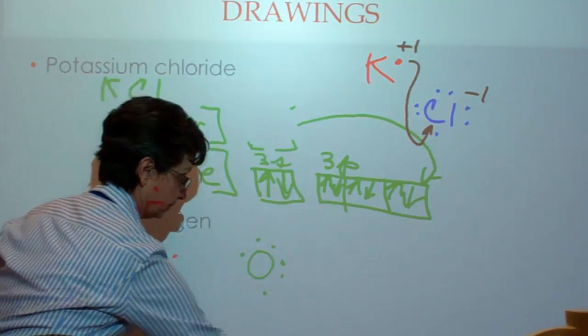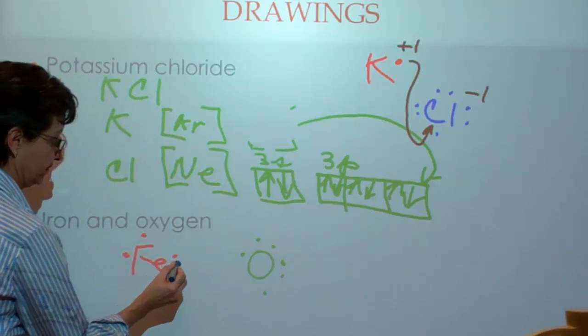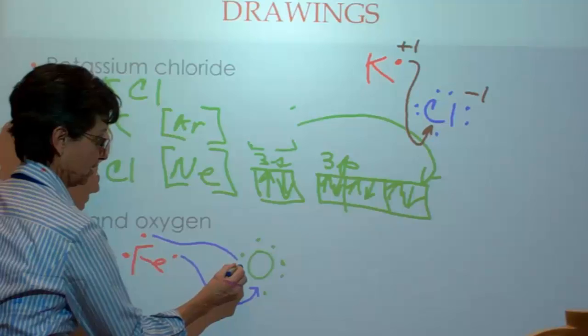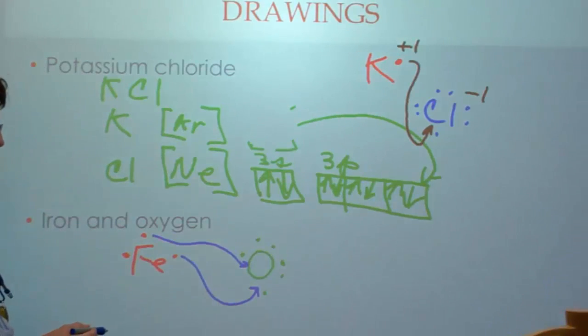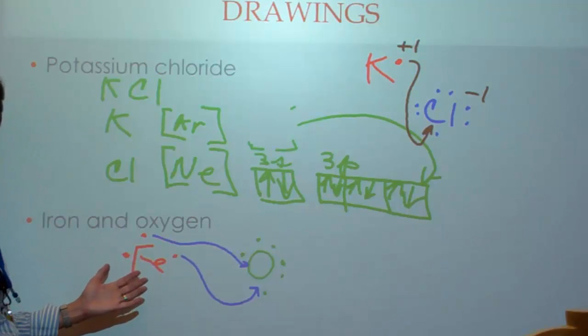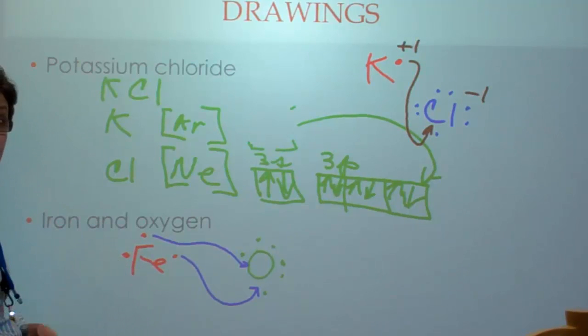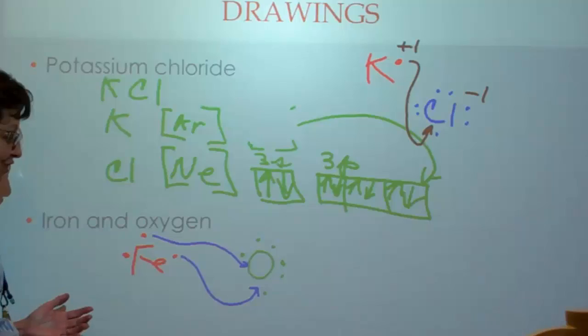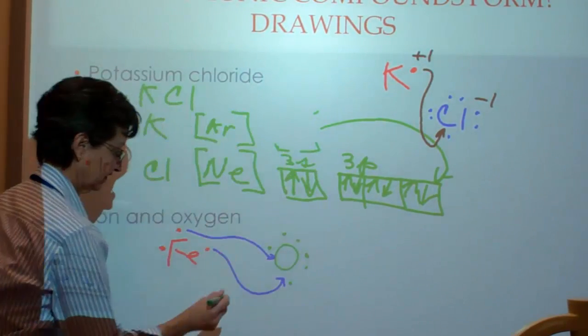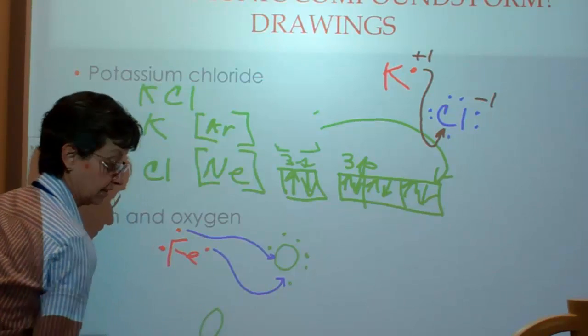Well, as a matter of fact, we can have this electron move in here, and this electron move in here. And, that satisfies the octet rule for oxygen, but certainly not for iron. It still has 1 electron left. So, what do we do next? Well, how about having a second oxygen?